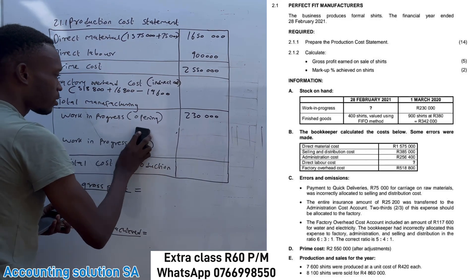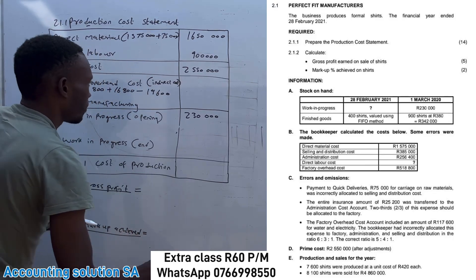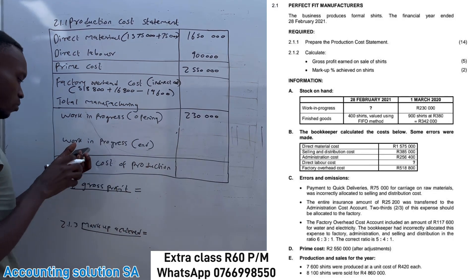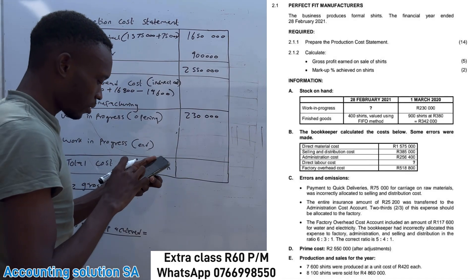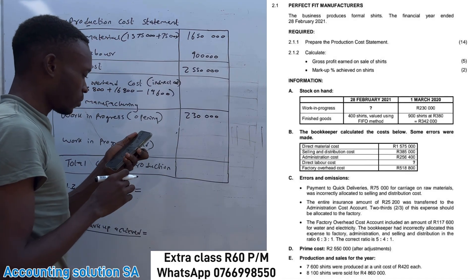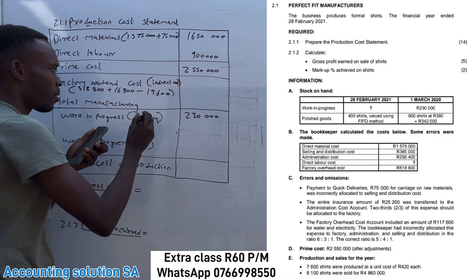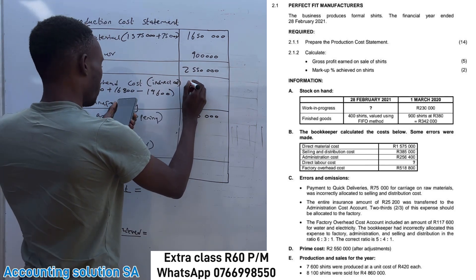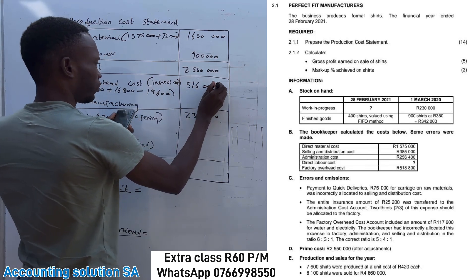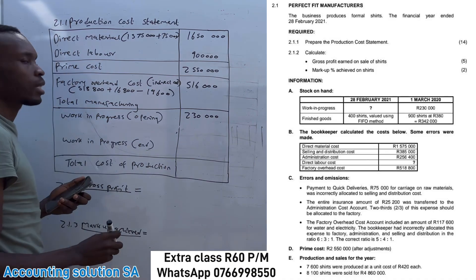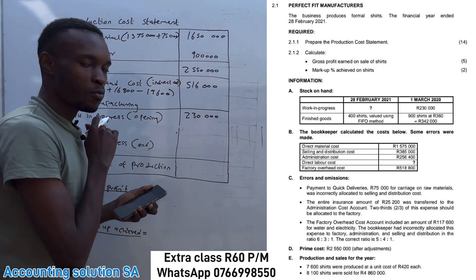That was 16 marks for free. Now we can close factory overheads. After all adjustments, you will get a factory overheads total of 516 000.